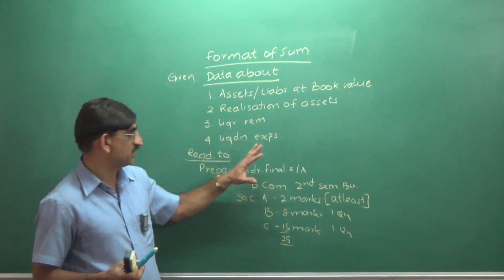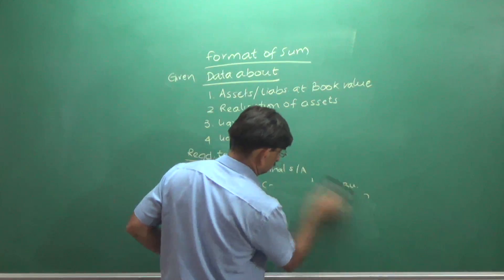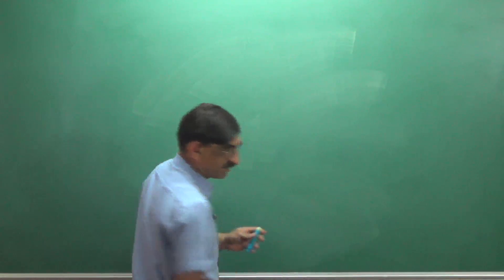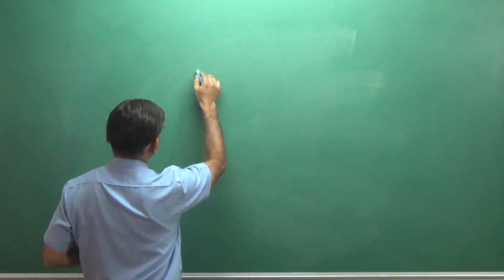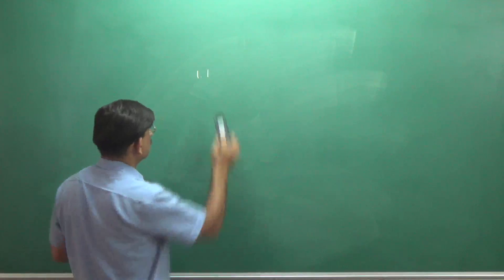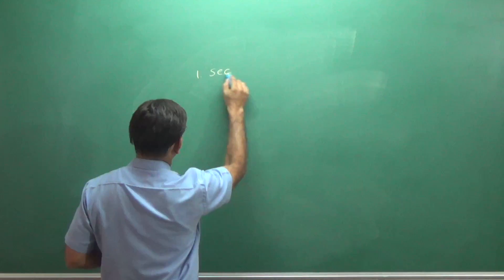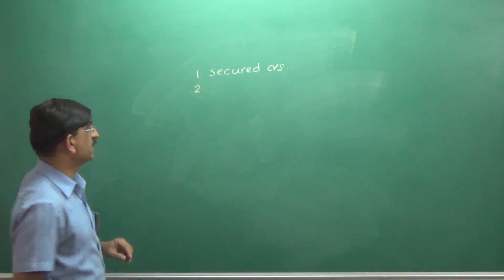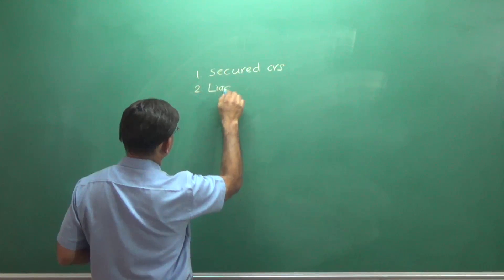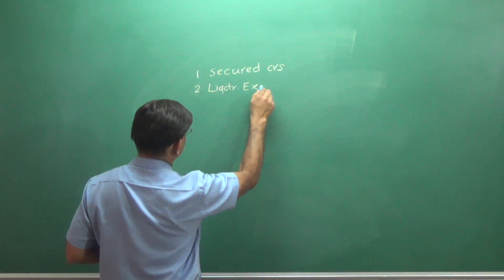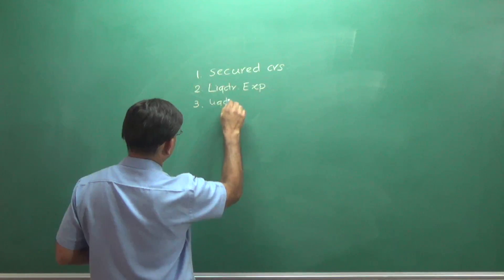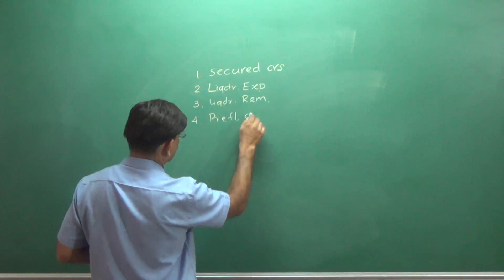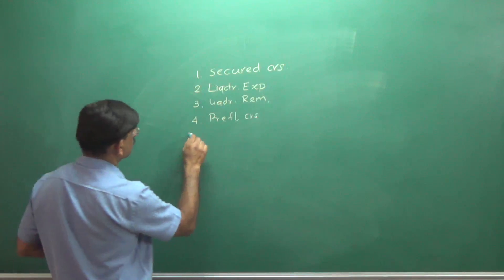The whole cream of this chapter is payment in order. So, what is that order we should pay the liabilities in? The order is secured creditors. This is the first thing that has been made. Then, we'll have to pay liquidators expenses, liquidation expenses, liquidators remuneration, preferential creditors, this is the order prescribed by the Companies Act. Fifth one,